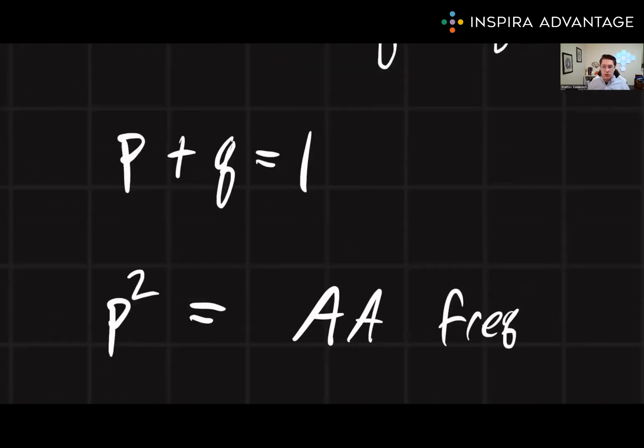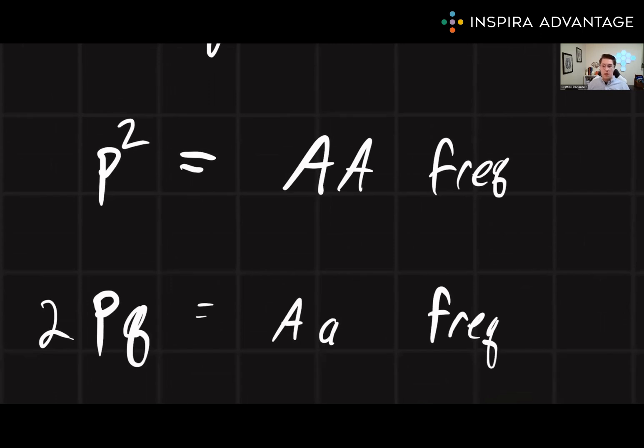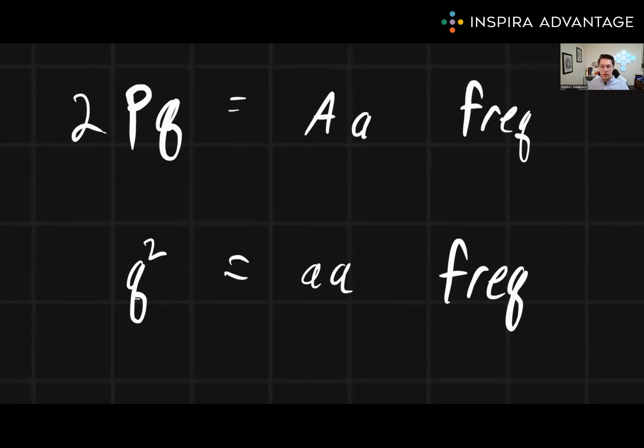We have p², which represents the proportion of individuals in the population that have two copies of the dominant allele, or homozygous dominant. Then we have 2pq. This equation represents the proportion of individuals in the population that have one copy of each allele, or are heterozygous. And q² represents homozygous recessive.